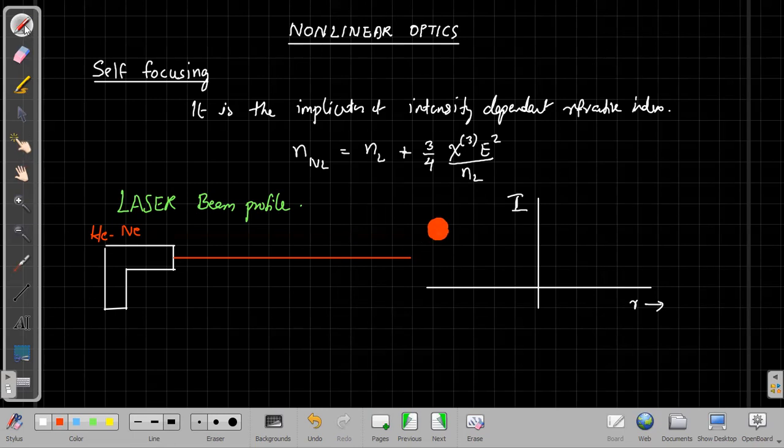So if you look at the beam, then the beam will not be having the same intensity all over. So its intensity would be large at the center, and when you are moving away from the center, the intensity would gradually reduce.